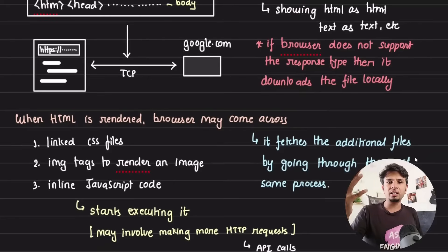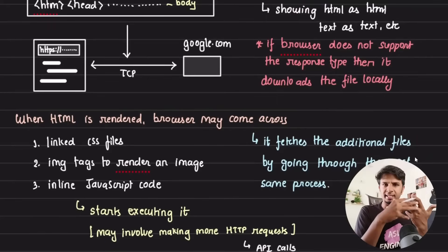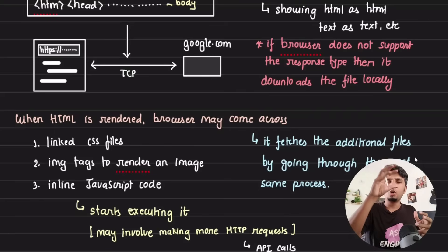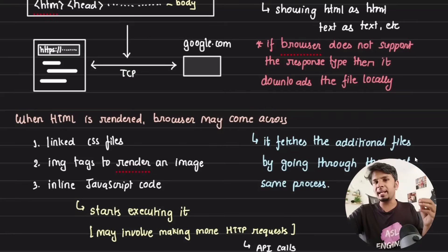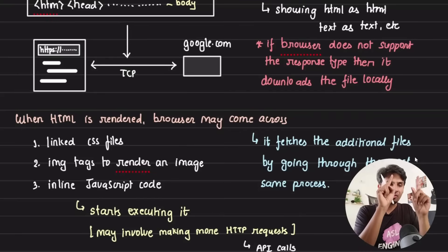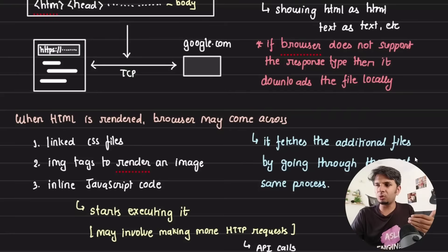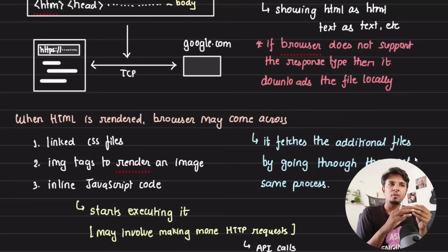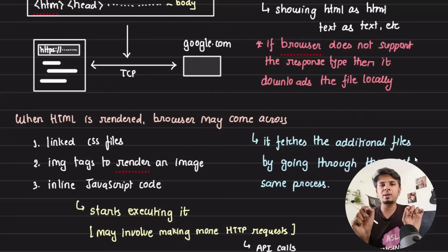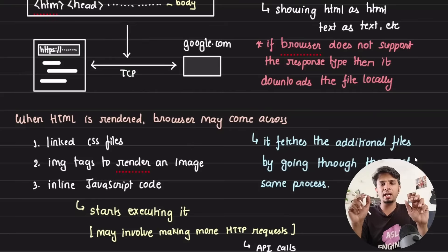Once the HTML is rendered, it may contain linked CSS files, image tags, and inline JavaScript. For linked CSS, the browser makes a GET request on that path, receives the CSS content, and applies it. Image tags work the same way — the browser loads and renders each image. Inline JavaScript executes in the V8 runtime engine that Chrome uses, and it may trigger subsequent API calls for authentication, loading data, and more. Wherever an HTTP call happens, this entire flow repeats behind the scenes.